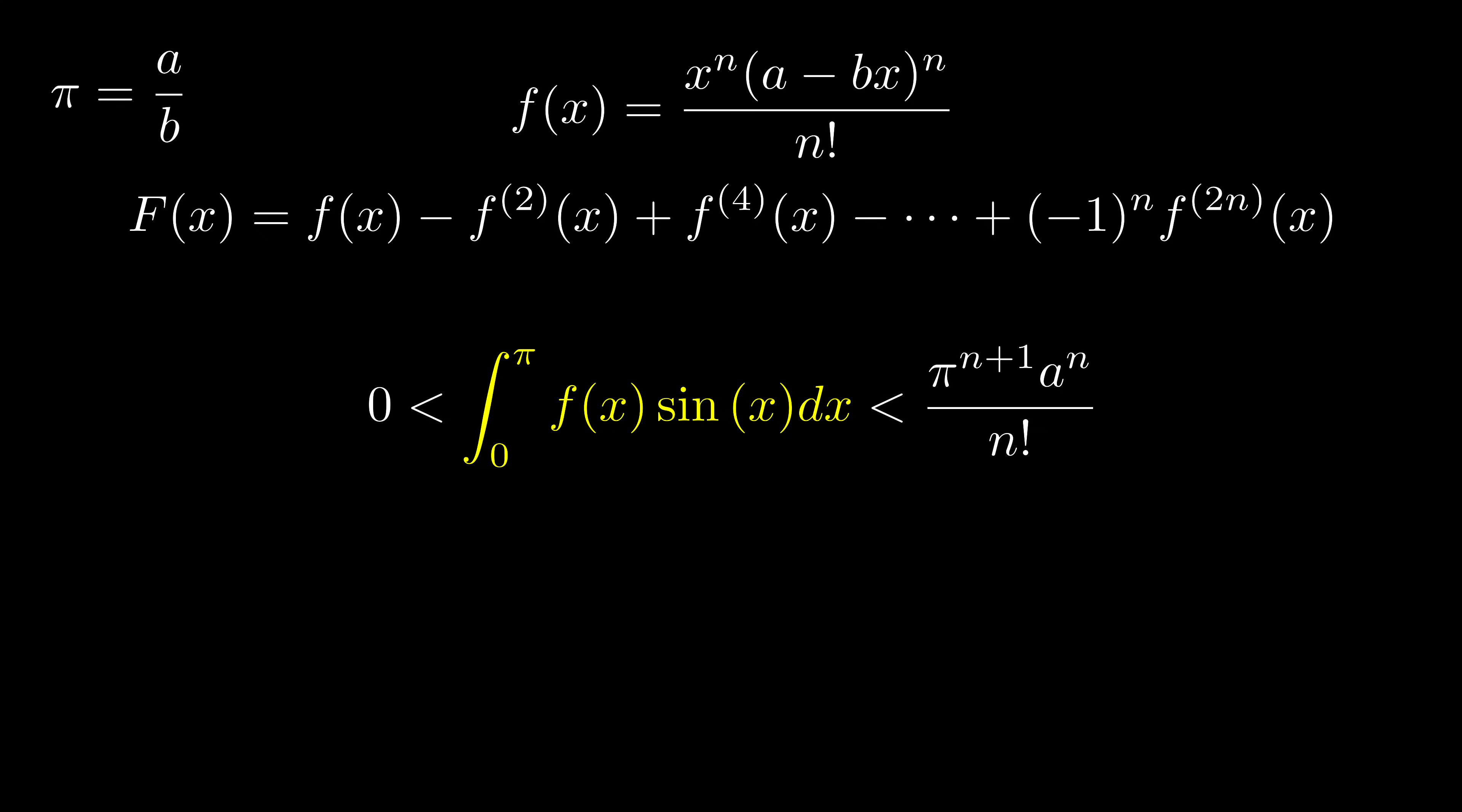Now it's time to pick our n. For whatever value a takes, we can pick n large enough such that this expression becomes less than 1. And there is no integer between 0 and 1. Therefore, we have a contradiction. So pi cannot be written as a over b, a rational number.